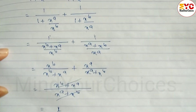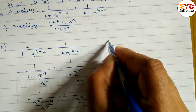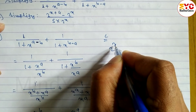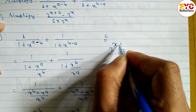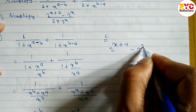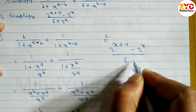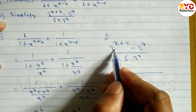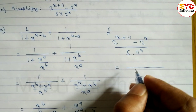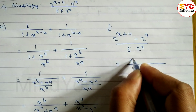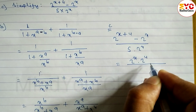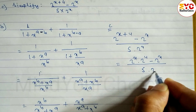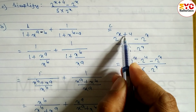Now look at the next question, part C. This is a slightly different type of question: 2 to the power (x plus 4) minus 2 to the power x, all divided by 5 into 2 to the power x. We expand 2 to the power (x plus 4) as 2 power x into 2 power 4, minus 2 power x, over 5 into 2 power x.